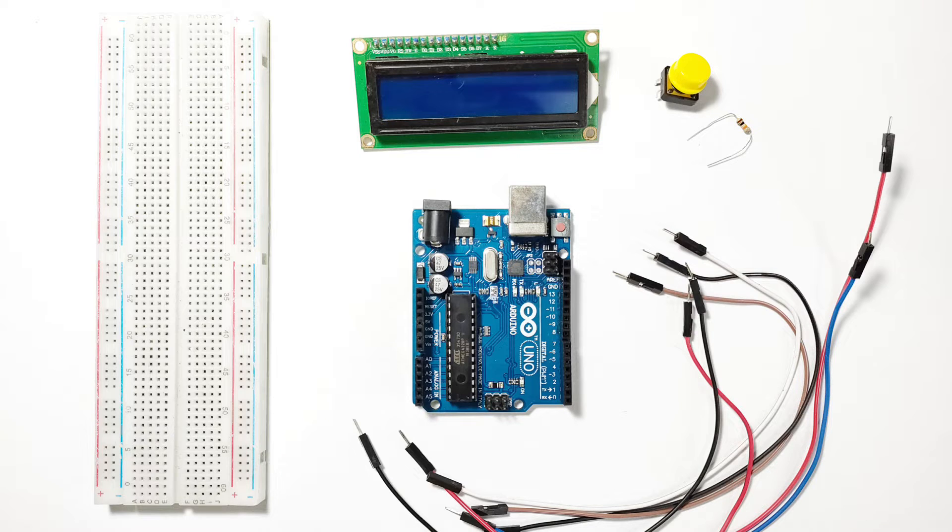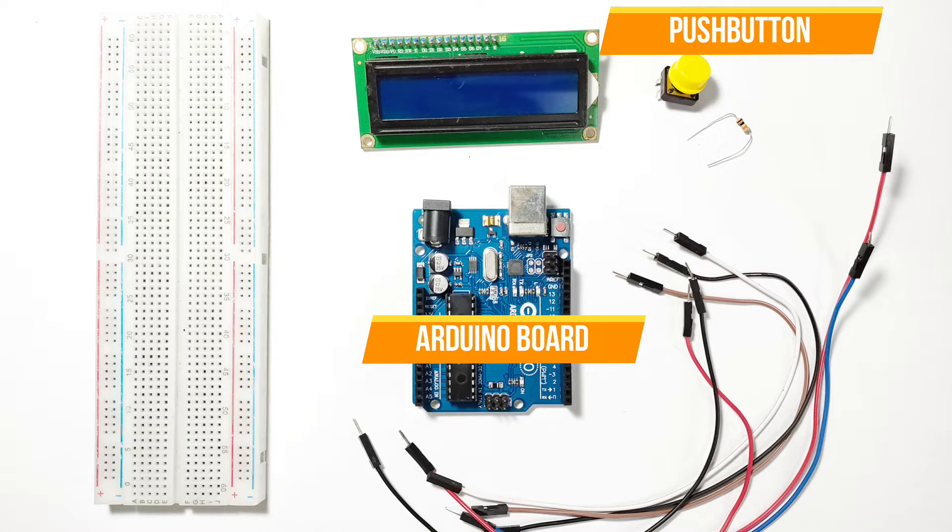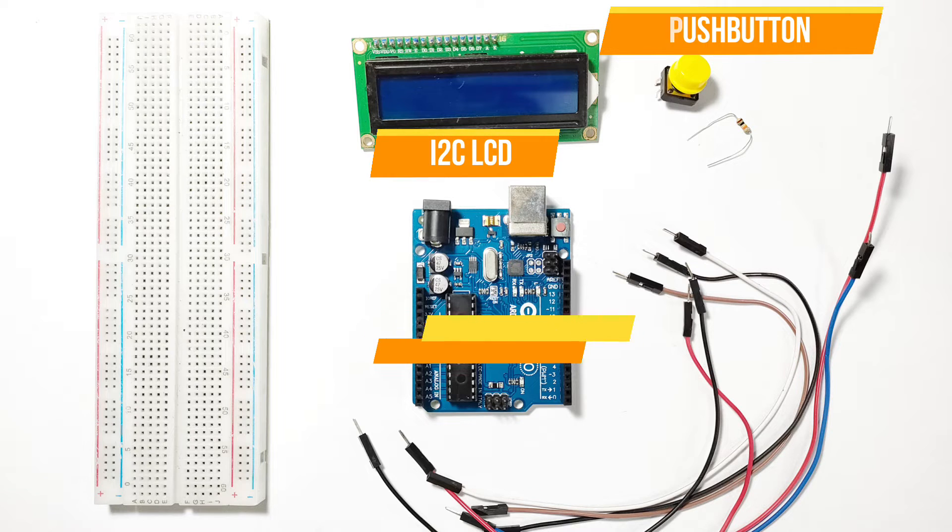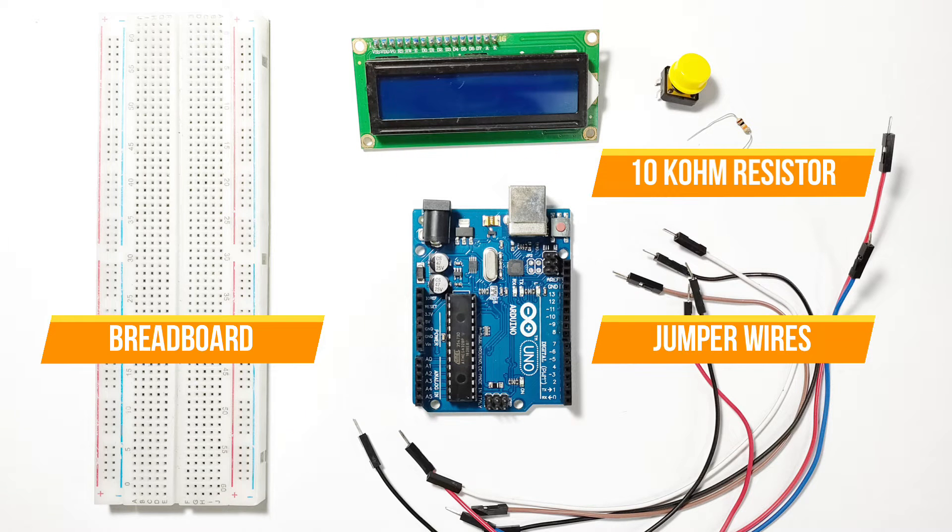Here's what you'll need for this project: an Arduino Uno, a push button, a 16x2 i2c LCD display, a breadboard and some jumper wires, and a 10k ohm resistor.